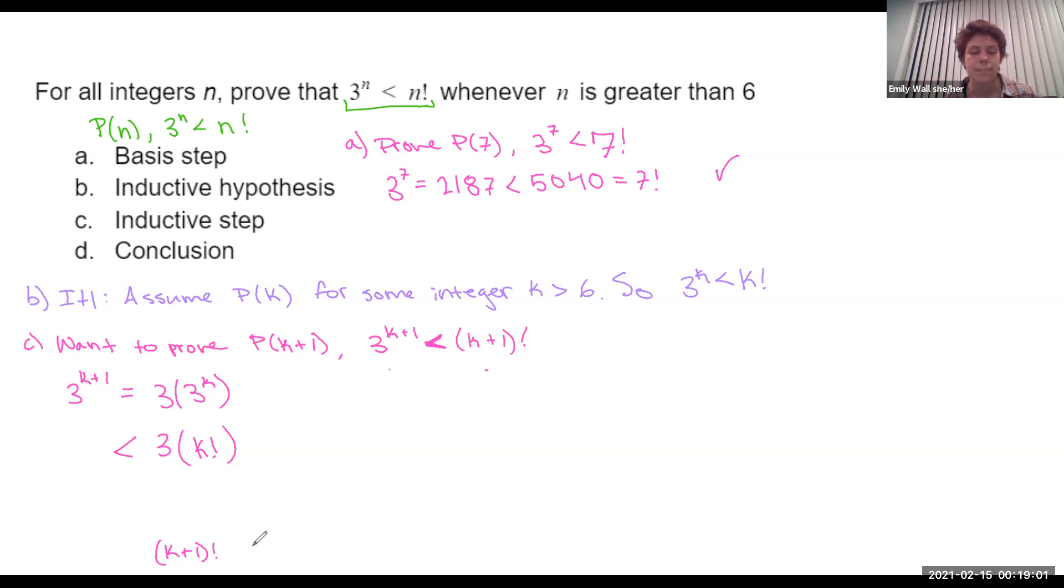Now we need to get from this line to this line. Well, how are these lines similar? We can rewrite (k+1) factorial as (k+1) times k factorial. And now these two lines are very similar. The difference is the 3 and the k+1.